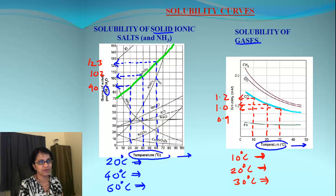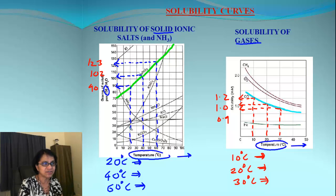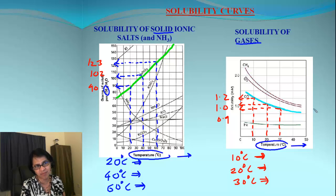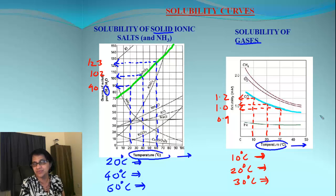Look carefully at the shape of both graphs. In the case of solids, the graphs are mostly sloping upward as we increase temperature. Whereas in the case of gases, the graphs go downward — the slope is downward. That's the visual difference.